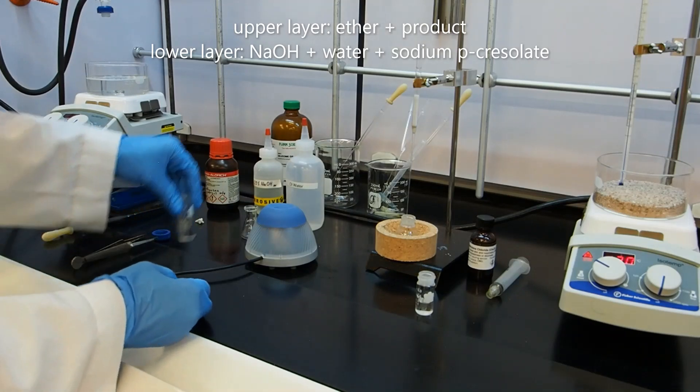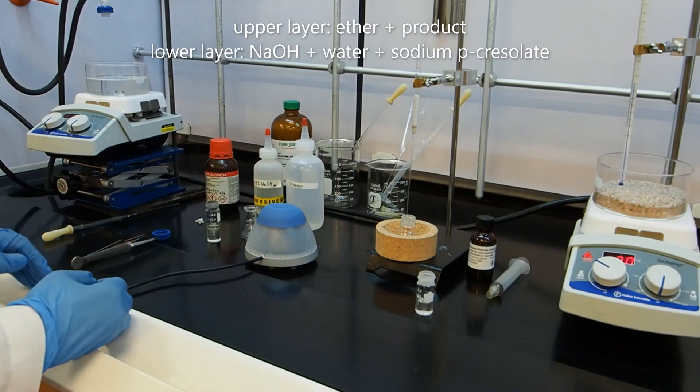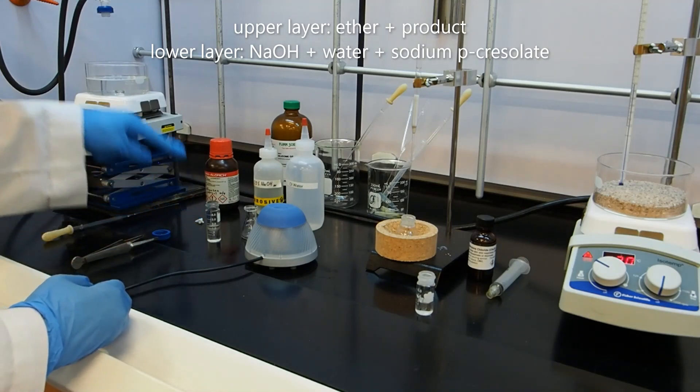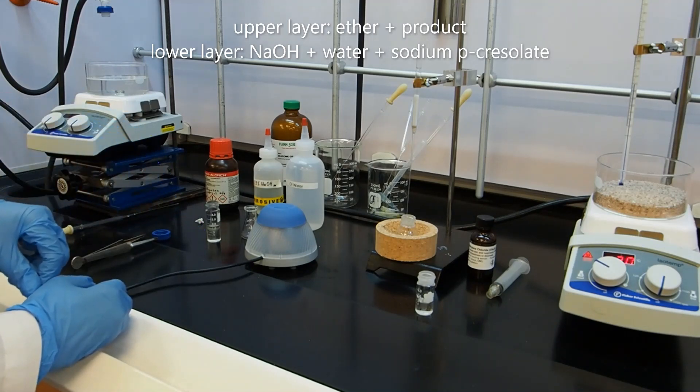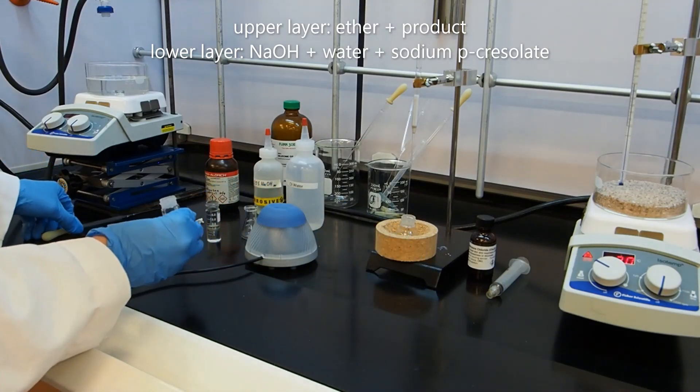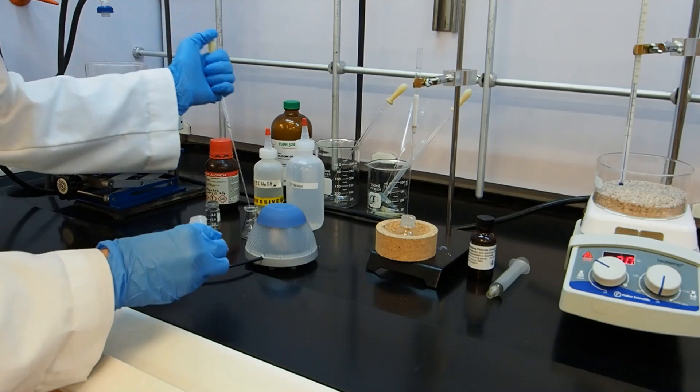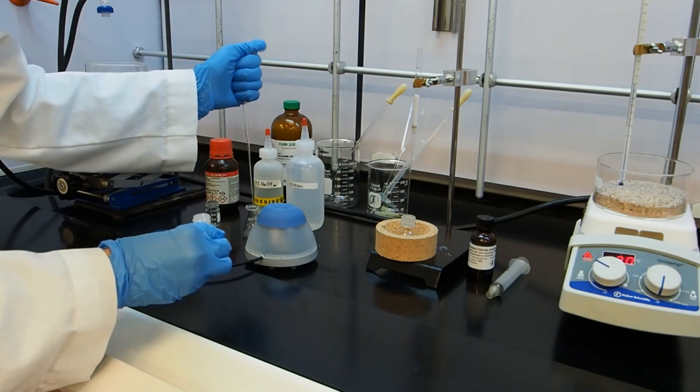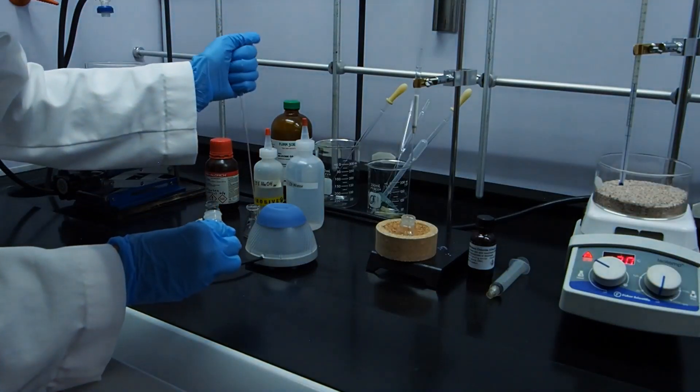So I'm going to do the same thing I did before. I've got two layers. I'm going to let them settle a little bit. The top layer again is our organic layer that should contain our product. And the bottom layer is our sodium hydroxide layer. I'm going to take my aqueous layer from before, and I'm going to put it in this Erlenmeyer flask. Erlenmeyer flask is pretty much waste. Oh, that's great. The lights went out on me.